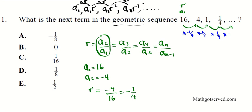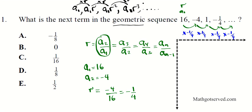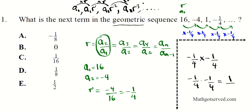To get the next term, simply multiply by negative one-fourth again. So I'm looking for a₅. I take a₄, which is negative one-fourth, and multiply by the common ratio, negative one-fourth. Negative one-fourth times negative one-fourth: multiply across — the negatives give a positive, and 4 times 4 is 16 — so the answer is positive one-sixteenth. The final answer for number 1 is option C.